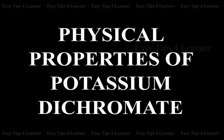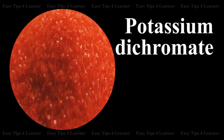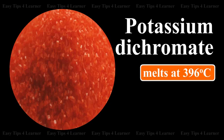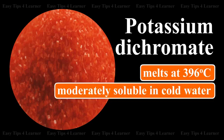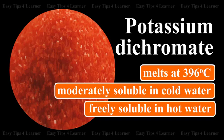Physical properties of potassium dichromate: It forms orange-red crystals which melt at 396 degrees Celsius. It is moderately soluble in cold water but freely soluble in hot water.